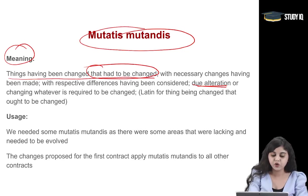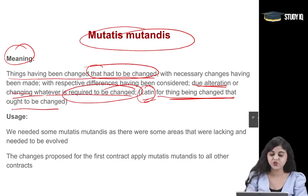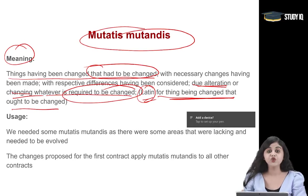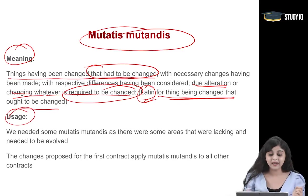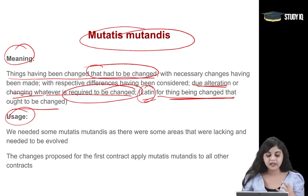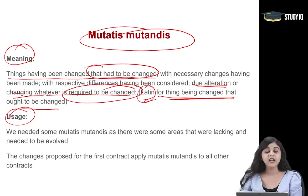Your due alteration, or changing whatever is required to be changed — this is a Latin word with origin meaning 'for things being changed that ought to be changed.' When you change those things that needed to be changed, that particular condition is called Mutatis Mutandis. We needed some Mutatis Mutandis as there were some areas that were lacking and needed to be evolved. The changes proposed for the first contract apply Mutatis Mutandis to all other contracts.